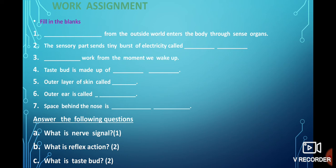First one: the blank from the outside world enters the body through sense organs. The sensory part sends tiny bursts of electricity called blank blank. Blank works from the moment we wake up. Taste bud is made up of blank blank. Outer layer of skin called blank. Outer ear is called blank. Space behind the nose is blank blank. Now you have seven to solve fill in the blanks, but if you count the blanks you will get ten only. So please solve it accordingly.